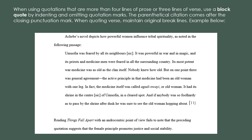If your paper includes quotations that have four lines of prose or three lines of verse, place quotations in a freestanding block of text and omit quotation marks. Indenting the entire passage one half inch from the left margin separates the text from the rest of the paper to let the reader know it is a long quote. Indent the entire passage, omit quotation marks, and place the parenthetical citation after the closing punctuation mark. Remember, this is for block quotes only.